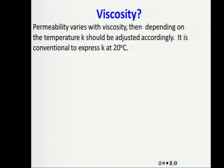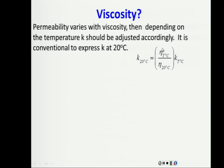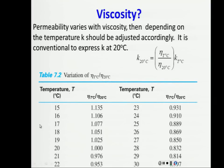There is a standardization: permeability is expressed at 20 degrees Celsius. If you measure at a different temperature, apply a correction factor — the viscosity at the actual temperature divided by the viscosity at 20°C, multiplied by the measured permeability. You can use the conversion factor table 7.2 in your book: read the temperature and apply the correction factor.